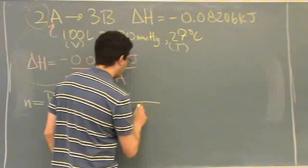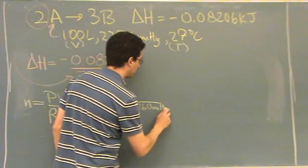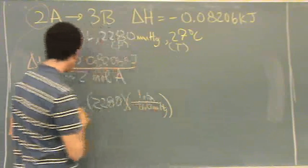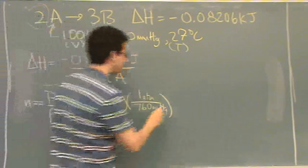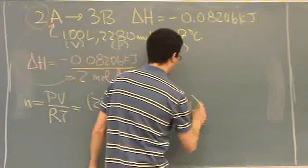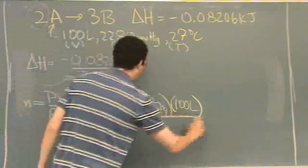To use the ideal gas law I have to have everything in atmospheres. So on the back of the test we'll be given this conversion: 760 millimeters of mercury for every one atmosphere. There's the P. The V, now 100 liters. There's P and V.